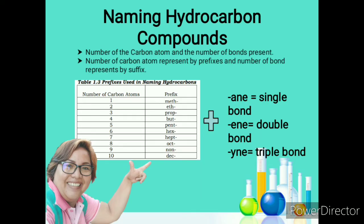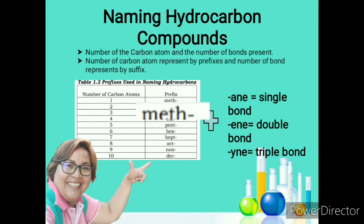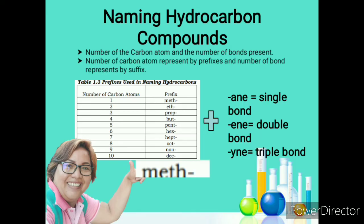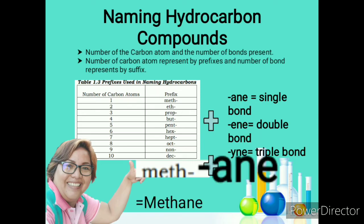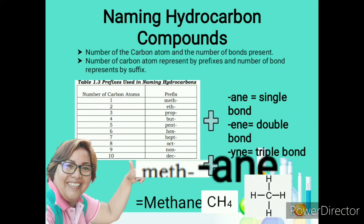Let's take a look at an example. Meth indicates that there is only one carbon atom present. Adding the suffix -ane to indicate a single bond gives us methane. Methane has a chemical formula of CH4 — one carbon atom and four hydrogen atoms — with a structural formula as shown in the picture.